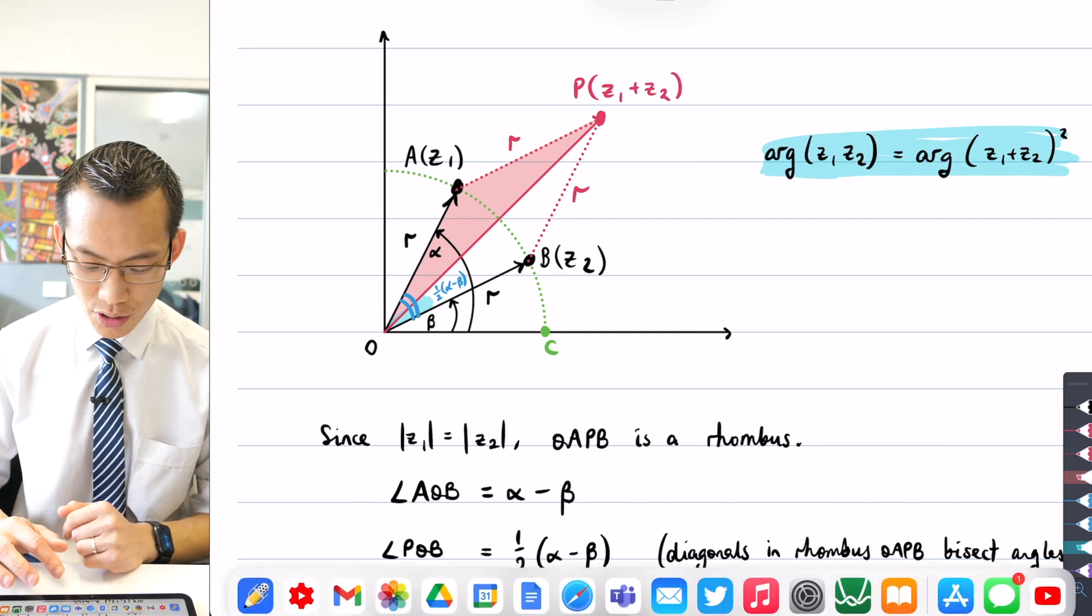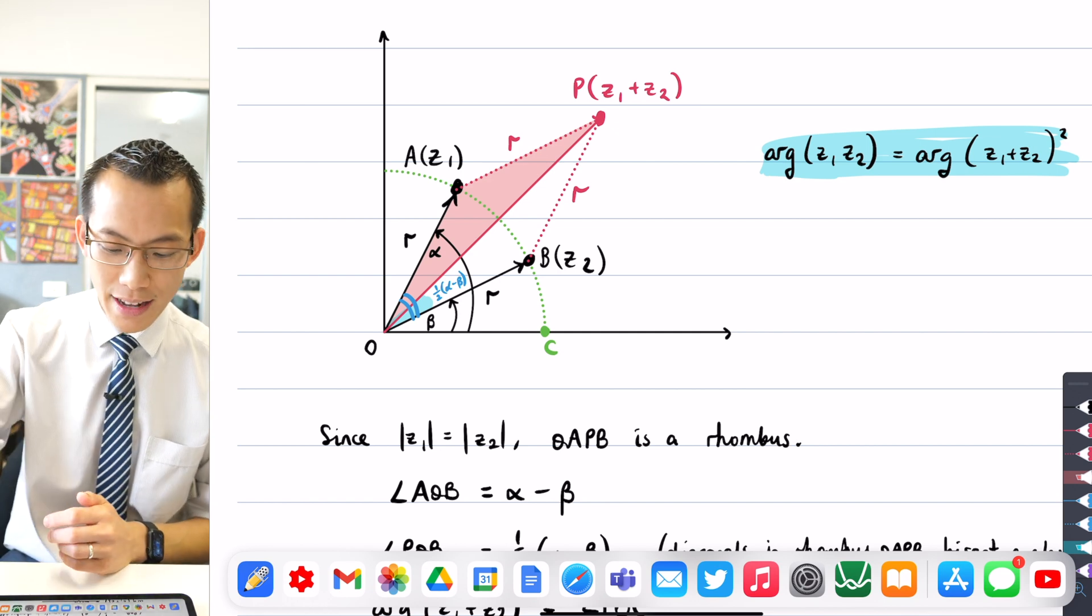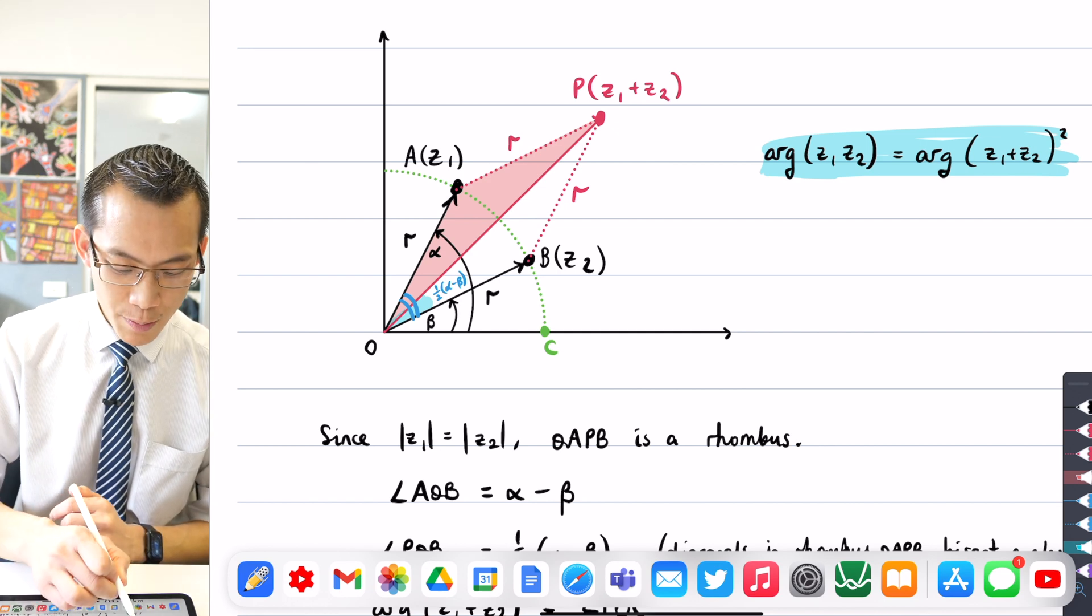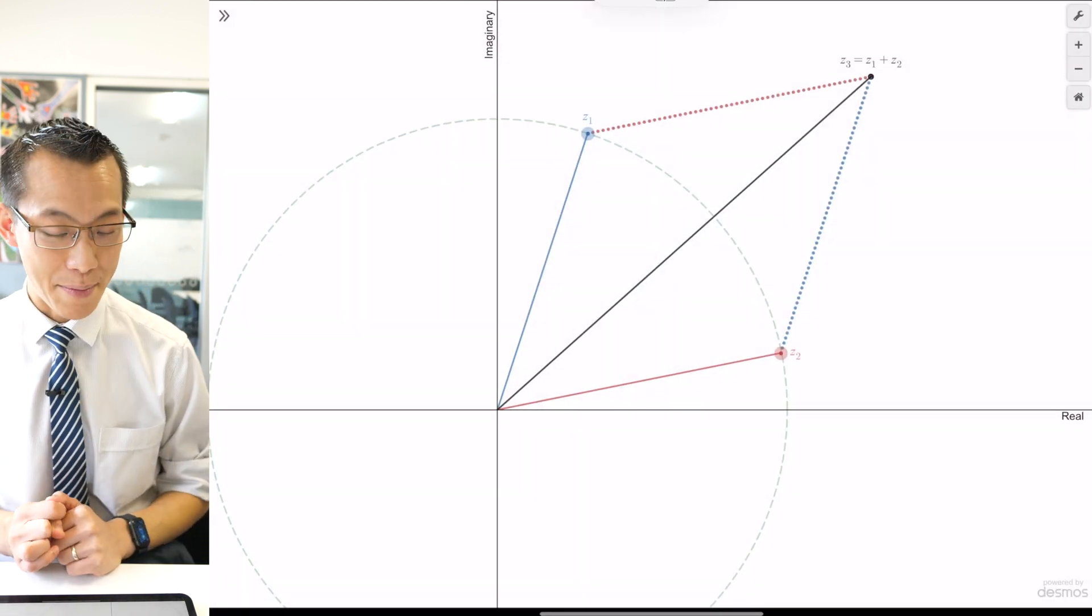So what I'm going to do is illustrate why that is and also bring us back to why we had to use this property that Z1 and Z2 have the same modulus. So let's have a look at this dynamically.